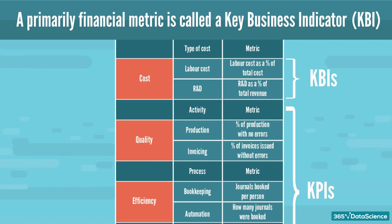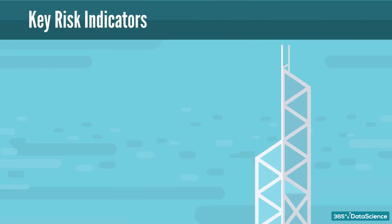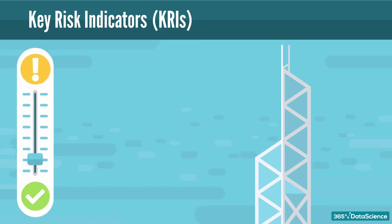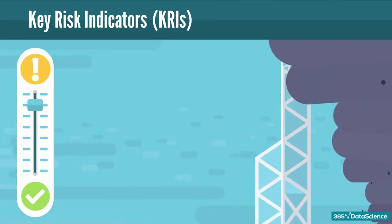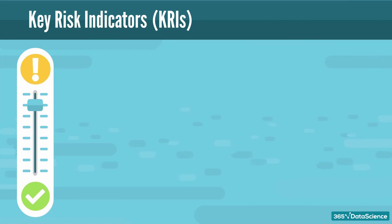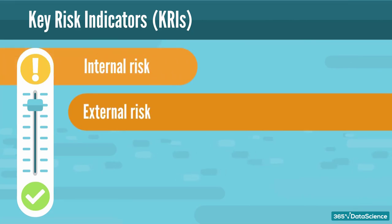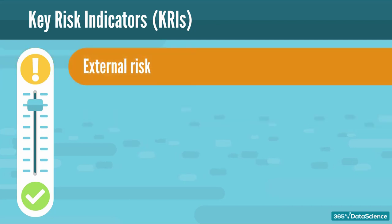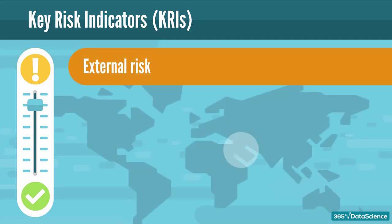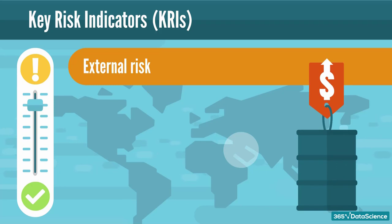Besides KPIs, which are primarily process-oriented, and KBIs, which are financial in nature, we can also have key risk indicators, or KRIs. KRIs are measures related to the risk level of a certain activity. Ideally, these metrics give you an early warning regarding a situation that could potentially harm your company's performance. KRIs can be oriented towards internal and external risks — for example, political unrest in the Middle East leading to higher oil prices, which can seriously impact your cost base and overall profitability.